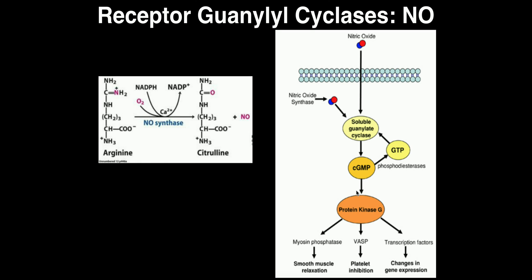Now we know what Viagra is used for today — treating erectile dysfunction — and the mechanism is actually the same. The vasculature in the penis, which maintains an erection, is controlled by this same pathway. By inhibiting cyclic GMP phosphodiesterase, cyclic GMP remains elevated longer, meaning more protein kinase G activity, more smooth muscle relaxation, and dilation of blood vessels in the penis, allowing for increased blood flow and helping men maintain an erection longer. This is why commercials warn that an erection lasting more than four hours warrants a doctor visit.